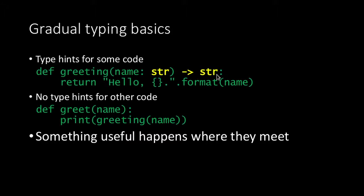The very simple thing is a function getting a string and returning a string. As you can see, the annotations are non-intrusive. It's very easy to understand — greetings takes a first argument called name which is a string, and it returns a string. This feature that enables us to do this is called annotations. It's been in Python 3 for a while now, and these annotations in this format are called type hints.